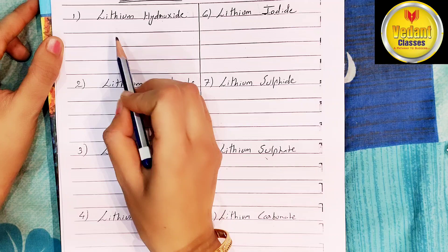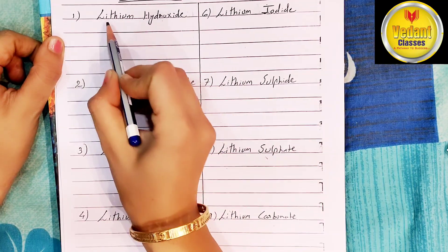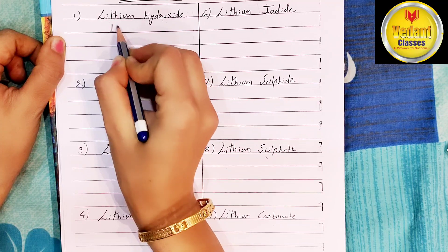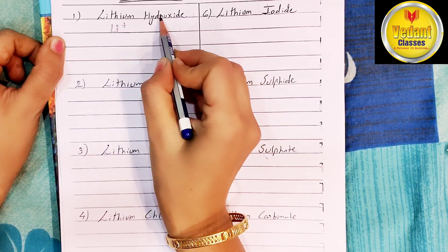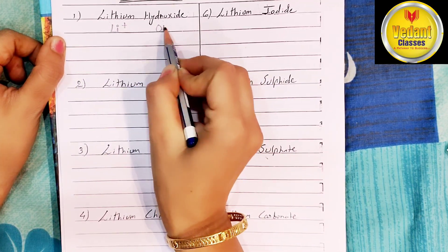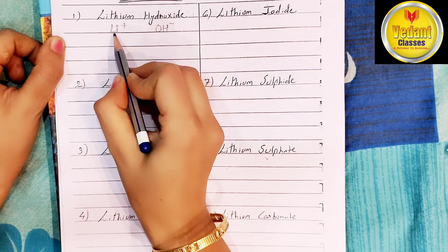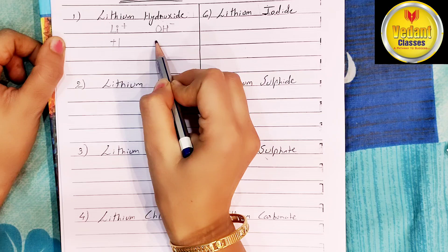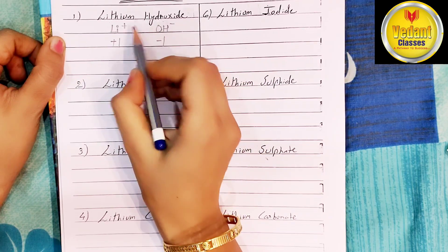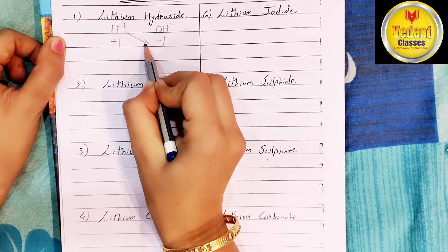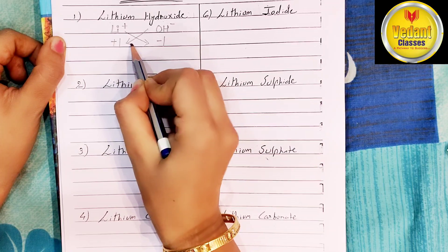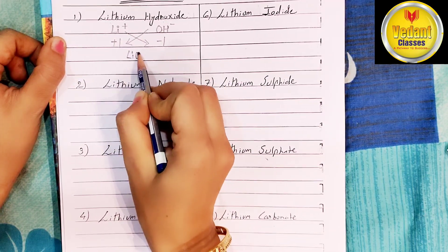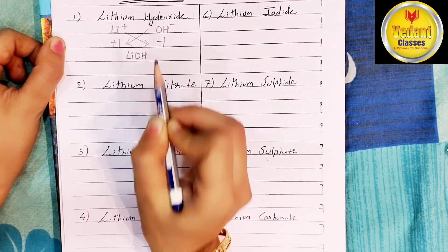Today we will see the compounds of lithium. Lithium hydroxide: lithium ion is written as Li+, hydroxide ion is written as OH-. Valency of lithium ion is plus 1, hydroxide ion is minus 1. Now cross the valency. Compound will be LiOH — lithium hydroxide.